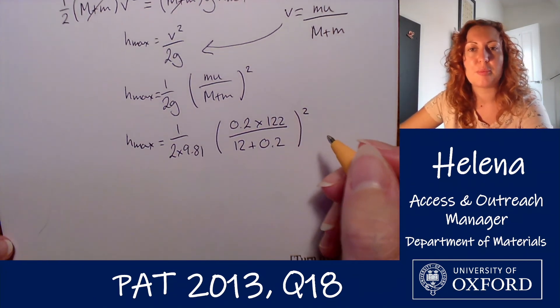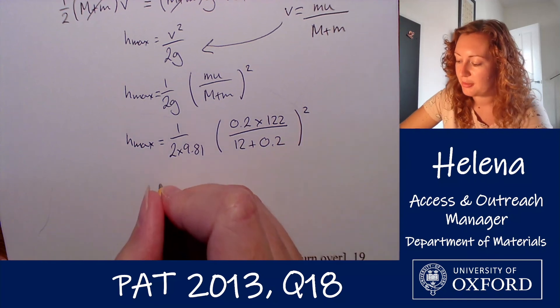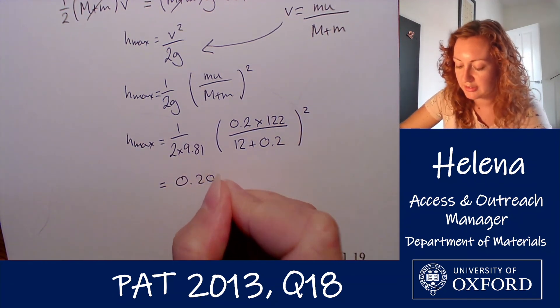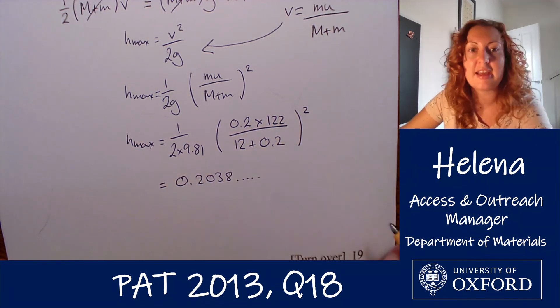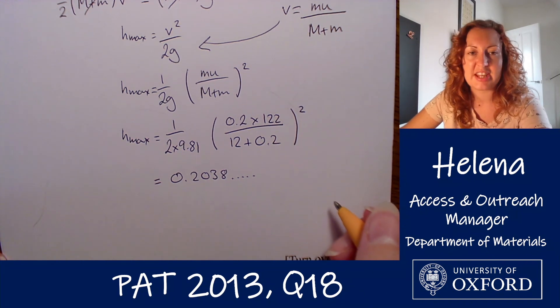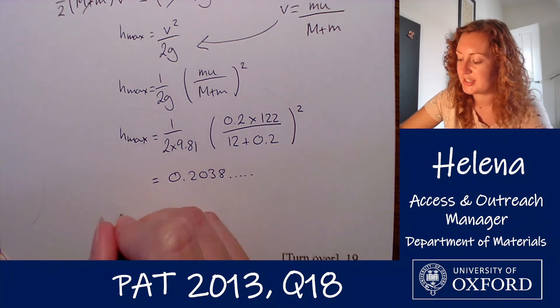Now if we put that into our calculators we find that that gives us a value of 0.2038 and so on. If we round that to a reasonable number of significant figures, let's take two.